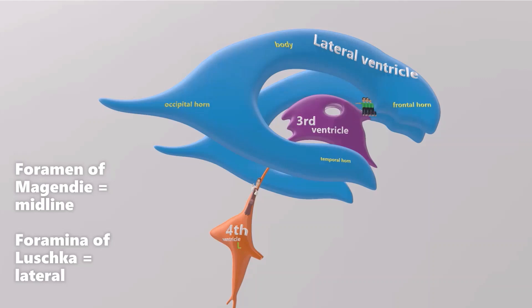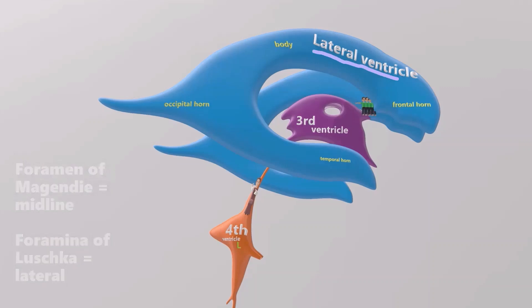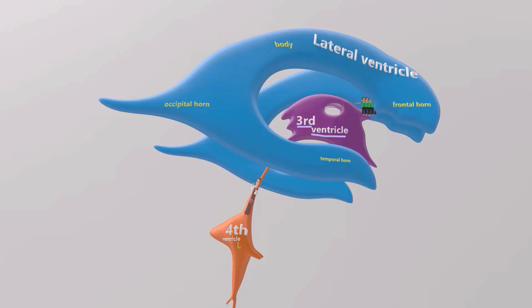The CSF empties from the lateral ventricles through the paired foramina of Monroe into the third ventricle, down the cerebral aqueduct of Silvius, and then into the fourth ventricle. From there, the CSF empties into the subarachnoid space through the foramen of Magendie in midline and the bilateral foramina of Luschka laterally, and from there goes down the central canal of the spinal cord.